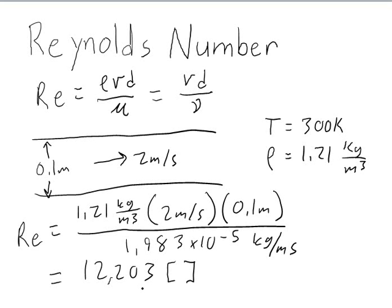And so we would say this 12,000 is significantly above 4,000 and we're in a tube, so we would assume this would be a turbulent flow if we were looking for a transition to see whether we were in a laminar or turbulent regime.